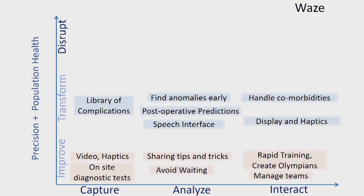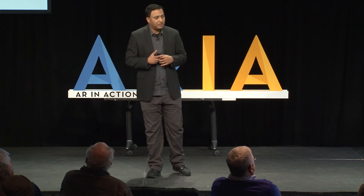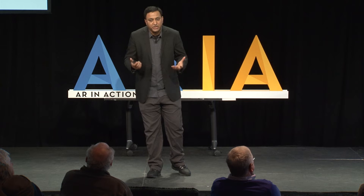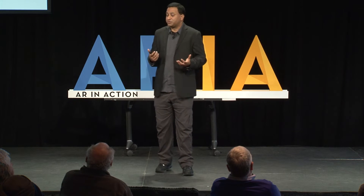So we have capture, analyze, and act. Any solution that you see in the world goes through three phases: we have to improve it, we have to transform, and we have to disrupt. But in the short term, just to improve — as we talked about sharing tips and tricks, avoiding the wait of managing teams, rapidly training and education — really creating Olympians out of new surgeons.